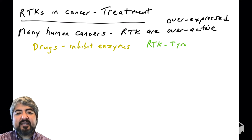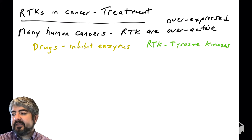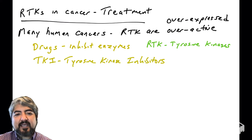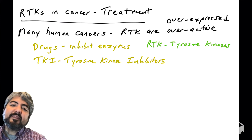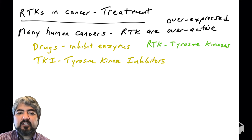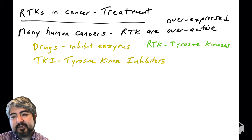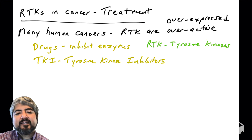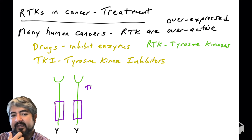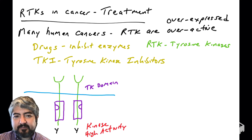Receptor tyrosine kinases — RTKs — are also called growth factor receptors. They are typically tyrosine kinases. Scientists have designed tyrosine kinase inhibitors that will bind to RTKs and inhibit their kinase activity. If you see the abbreviation TKI, that stands for tyrosine kinase inhibitors. There are many tyrosine kinase inhibitors; today we're going to talk about some that inhibit receptor tyrosine kinases specifically.